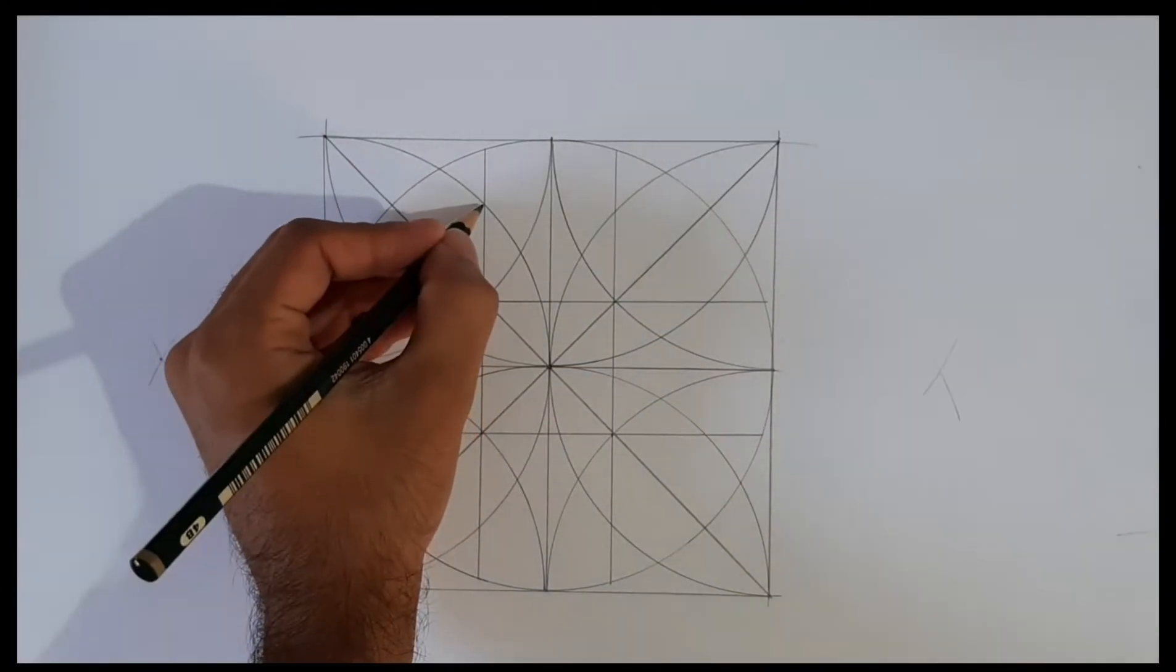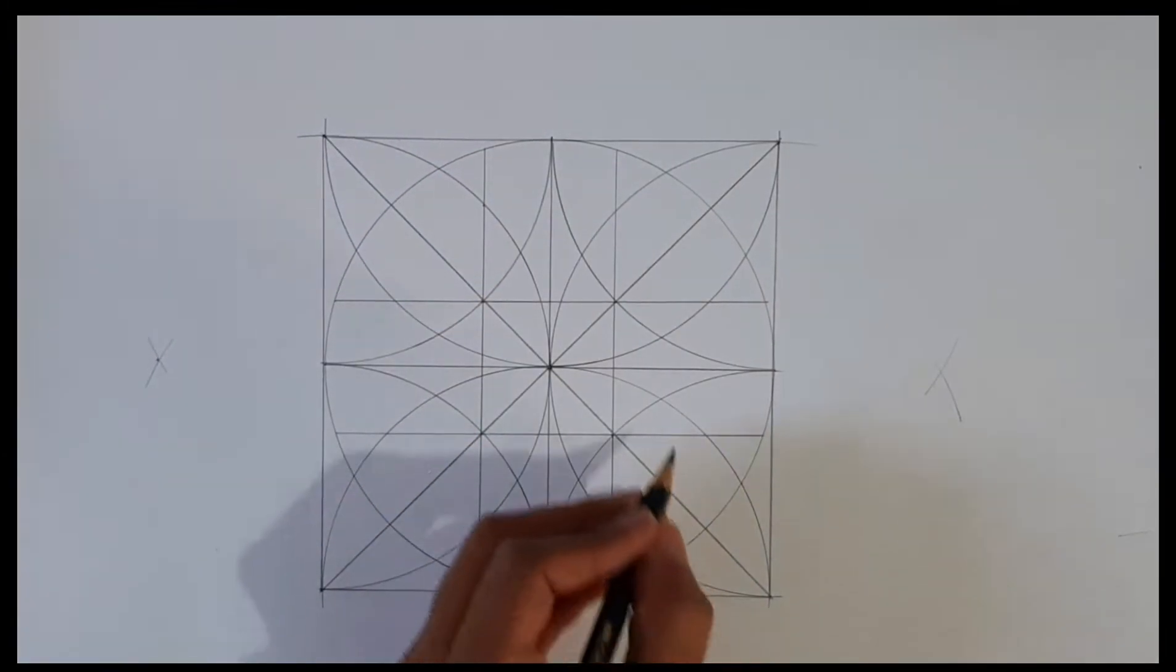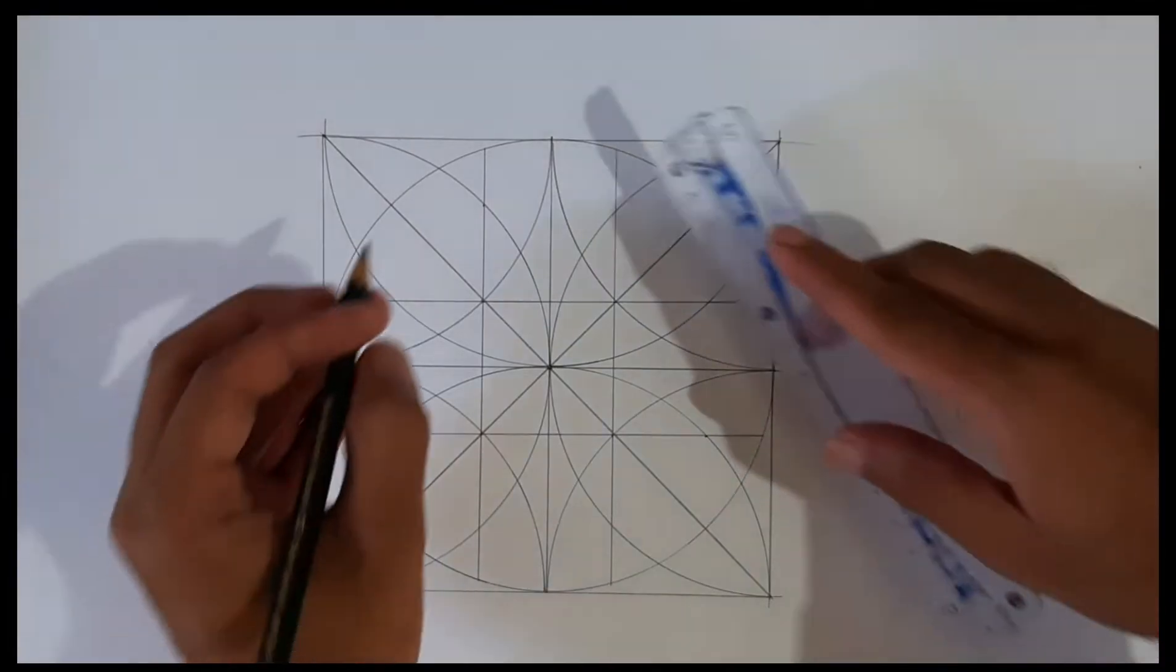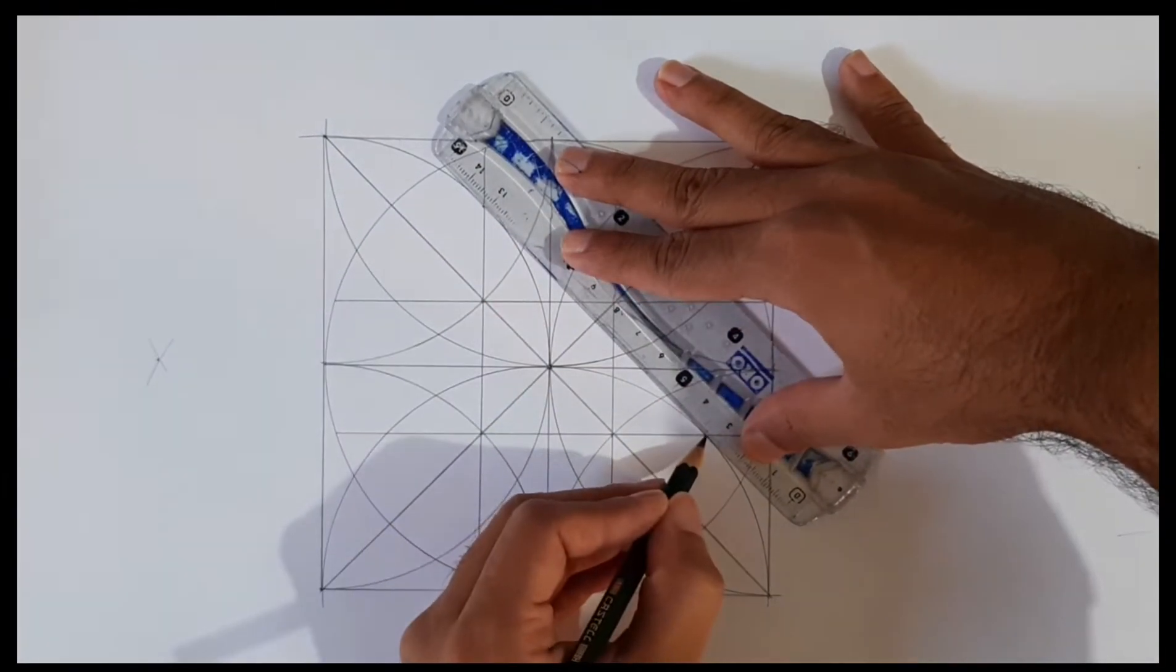Now there comes a little difficult lines. We will draw new diagonal lines by joining the points where previously drawn semicircles meet the newly drawn horizontal and vertical lines.